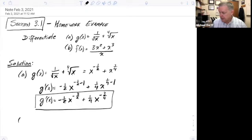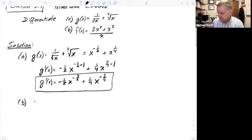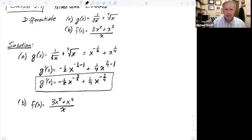All right, for part B, we have f of x equals 3x squared plus x cubed over x. And now you know we're going to use the power rule on this one, but you're going to say, wait a minute, I just don't have x to some power here. I've got a numerator and a denominator.